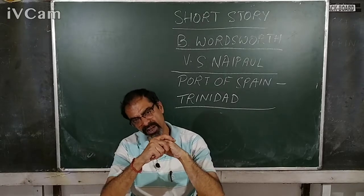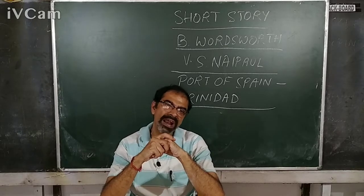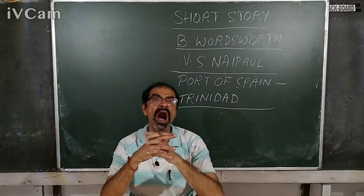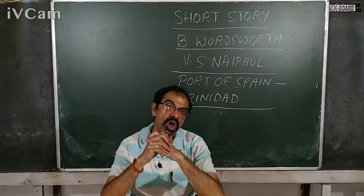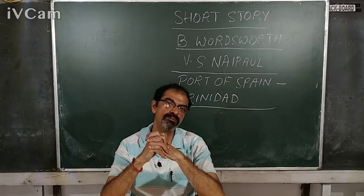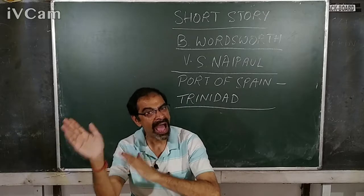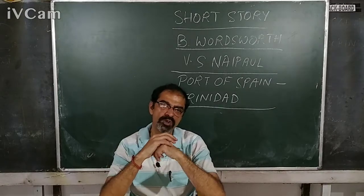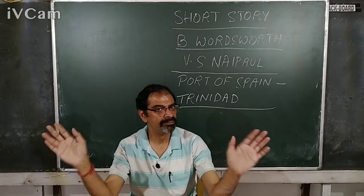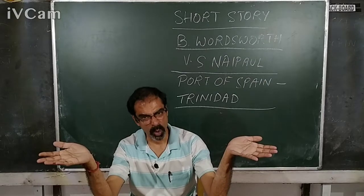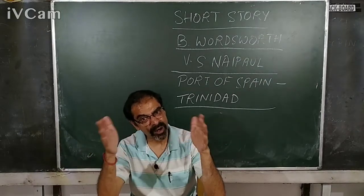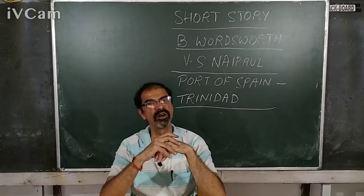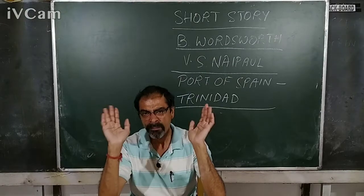Another important point: this story is about the friendship between a man and a child. We will see how this friendship develops and grows, how the child becomes attached to that man, and how that man also becomes very close to the child. This child lives with his mother — he has no father — and he is eight or nine years old. The child is the narrator of this story, so the 'I' in the story is the child who narrates it.